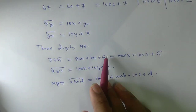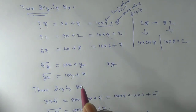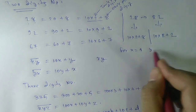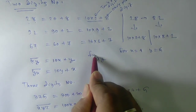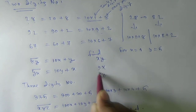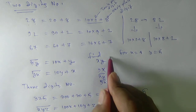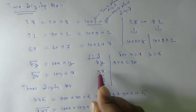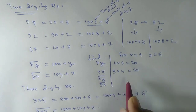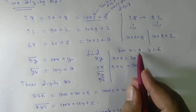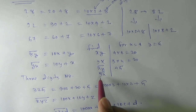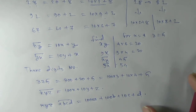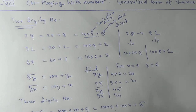A question may arise: what if we take XY without the bar? For example, let X = 4 and Y = 5. If asked to find XY and YX without bars, XY means X multiplied by Y = 4×5 = 20, and YX also means 5×4 = 20. But XY̅ with a bar means the number 45, and YX̅ means 54. Notice the difference — that is the key distinction. I hope you have understood the generalized form of numbers.